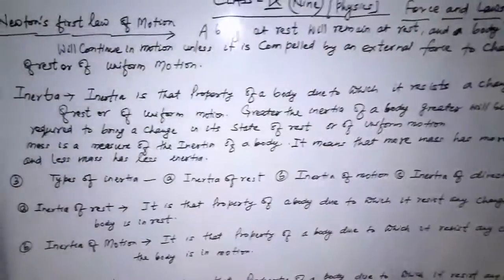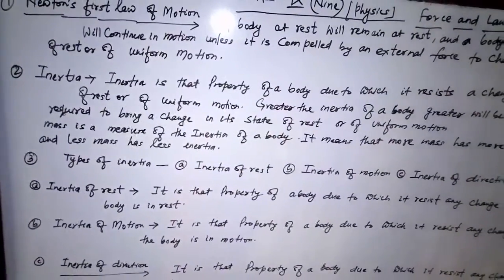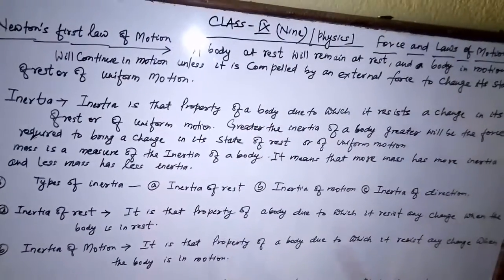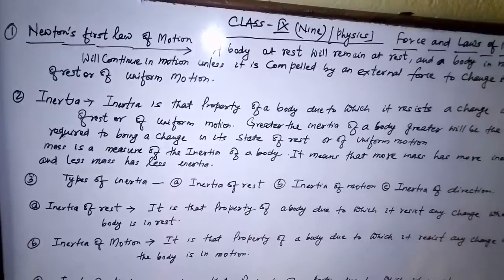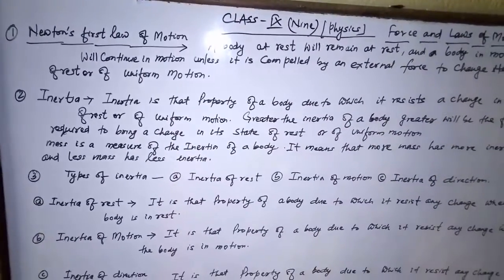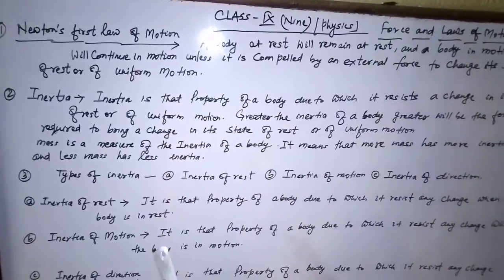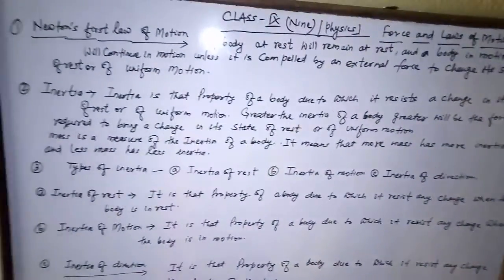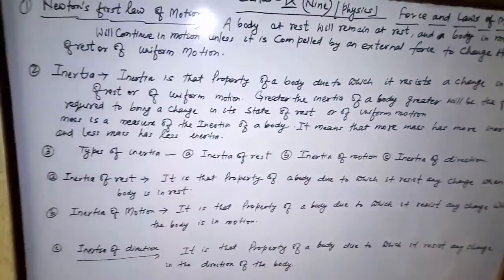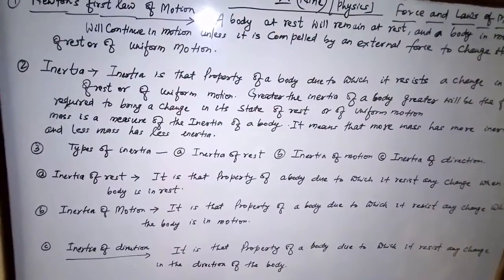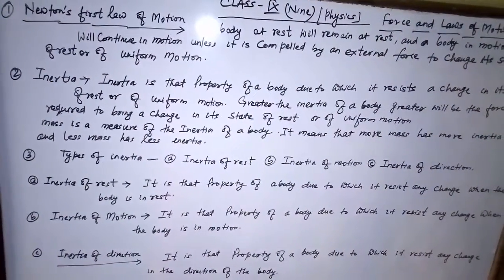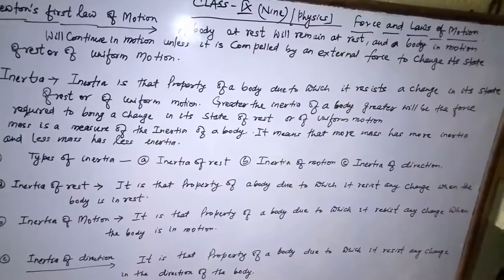In your textbook, a question is given: you have two coins — one five-rupee coin and one one-rupee coin. Which has more inertia? According to the definition of inertia, the five-rupee coin has more inertia than the one-rupee coin, because the five-rupee coin has more mass in comparison to the one-rupee coin.